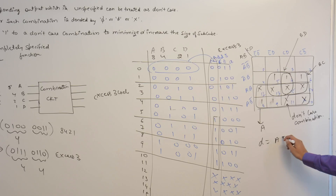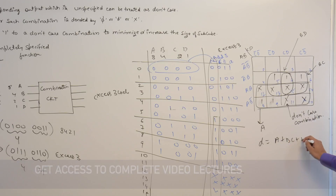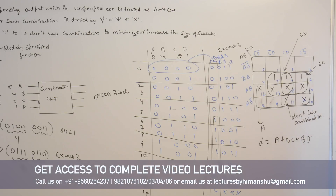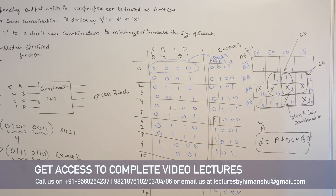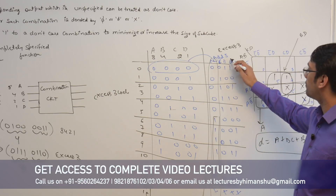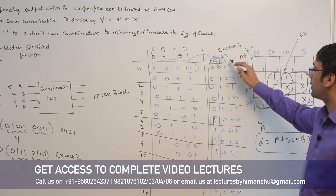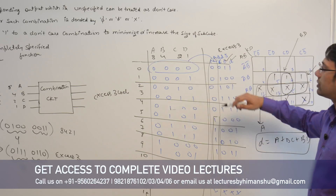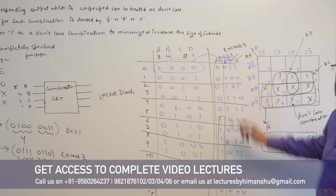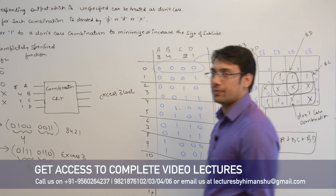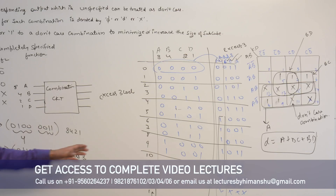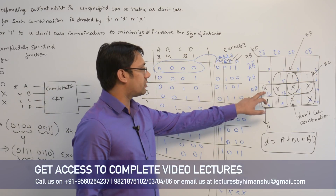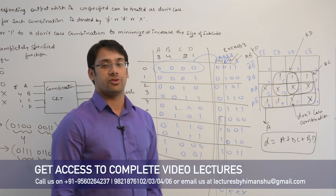The largest subcube represents A, the second subcube represents BC, and the third subcube represents BD. Therefore, the switching expression for small D is: D = A + BC + BD. This is how we use don't care combinations to simplify a function. We can assign either 0 or 1 to a don't care combination depending on which helps minimize the expression.